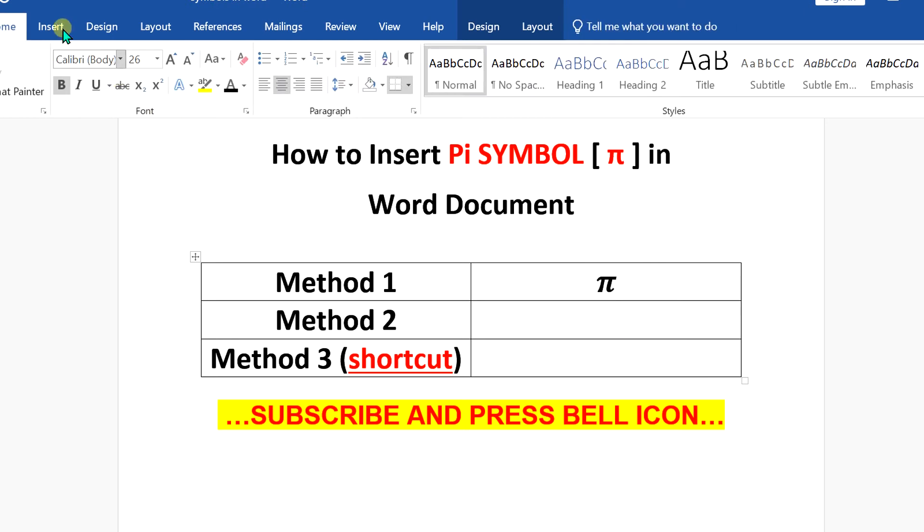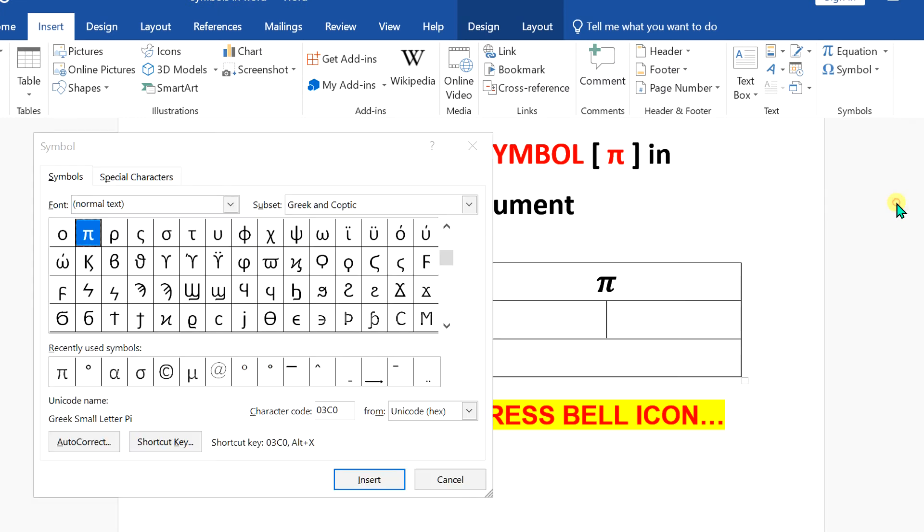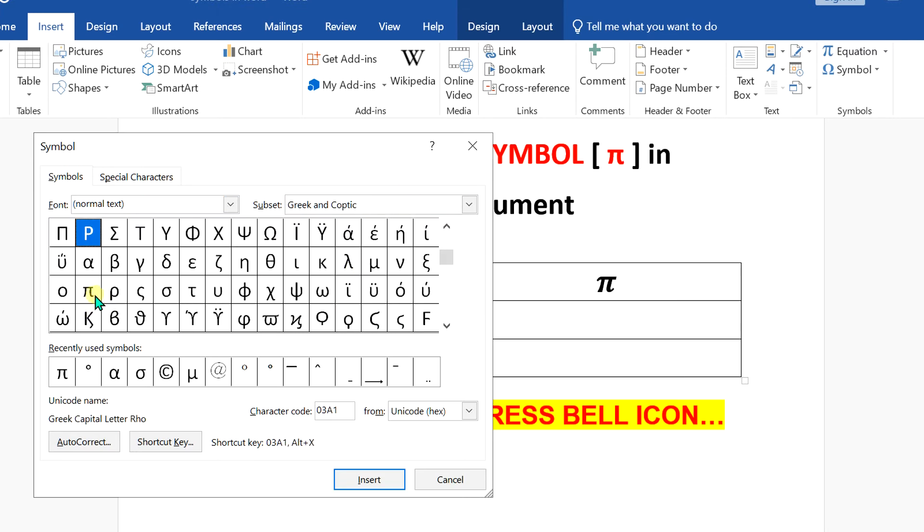In the next method, go to the insert option, click on symbol and more option. Under the normal text option here, make sure you select Greek and Coptic and after selecting, you will see here option pi.